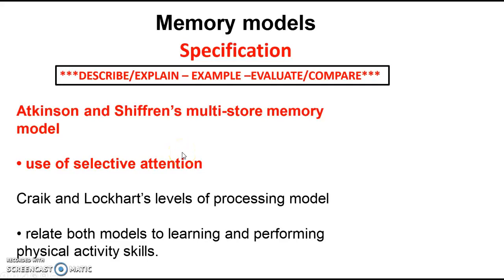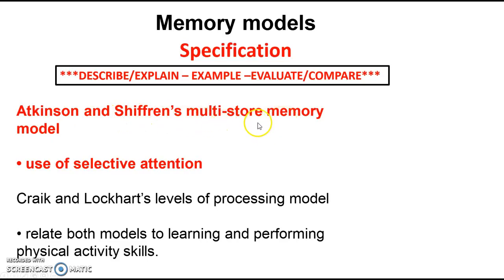Hello, welcome to today's screencast. The focus is going to be on memory models within the skill acquisition part of the specification. We're basically looking at memory as a vital part of sport — the processes by which we can store information to memorise it, and how we can use that information to actually perform skills. We have to look at two models, and today's focus is going to be on Atkinson and Shiffrin's multi-store model of memory.